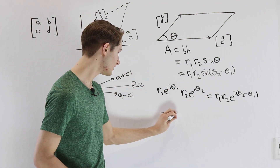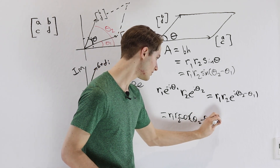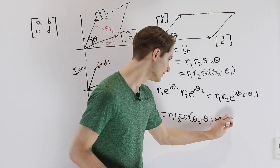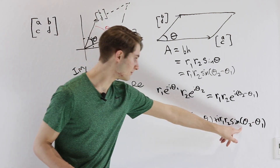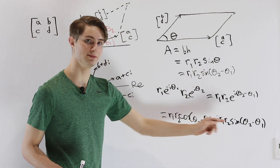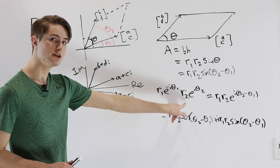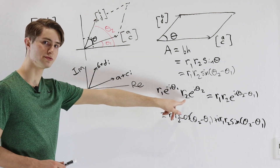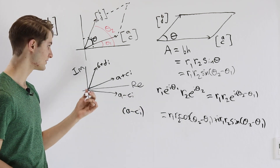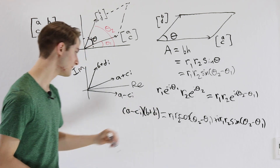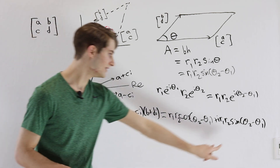Now if we multiply our reflected complex number by the second complex number, we get R1·R2·e^(i·(theta2 - theta1)). Applying Euler's identity — e^(i·angle) equals cosine(angle) plus i·sine(angle) — this expands to: R1·R2·cosine(theta2 - theta1) plus R1·R2·i·sine(theta2 - theta1). We have R1·R2·sine(theta2 - theta1) right there — the imaginary part of our result — exactly what we need for our area formula.